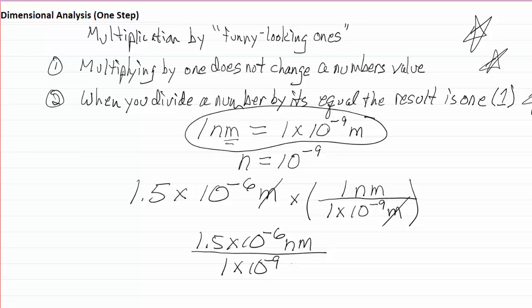Now when you divide 1.5 by the one, I'll just get the 1.5. But the ten to the minus sixth over ten to the minus ninth, in that case I subtract the exponents. Negative six minus a negative nine is negative six plus nine, or three. So the exponent on the ten becomes a third, and I have my units of nanometers.